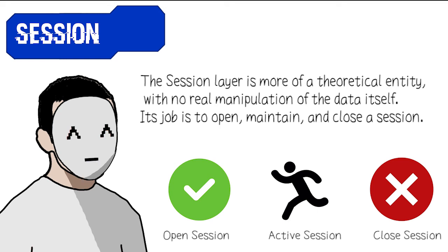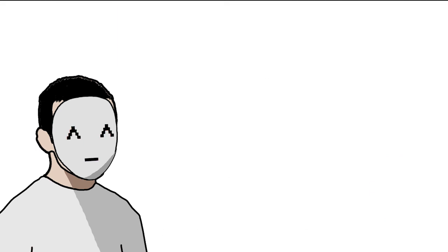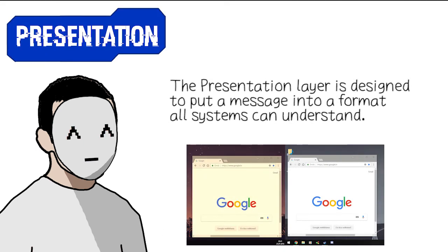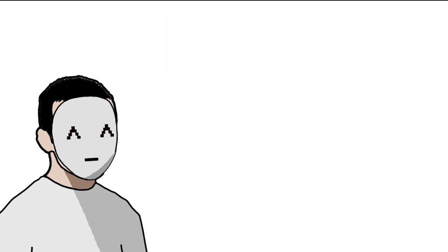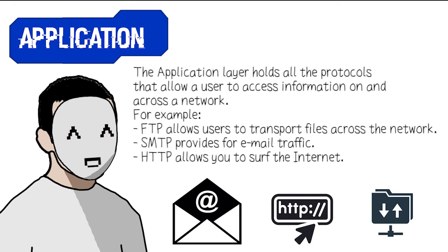The session layer is more of a theoretical entity with no real manipulation of data itself; its job is to open, maintain, and close the session. The presentation layer is designed to put a message into a format that all systems can understand. The application layer holds all the protocols that allow a user to access information on and across a network — for example, FTP allows the user to transport files, SMTP provides email traffic, and HTTP allows you to surf the internet.